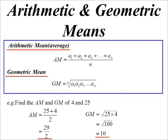So the number pattern, if it was an arithmetic series, would go 4, 29 over 2, 25. But if it was geometric, the pattern would go 4, 10, 25.